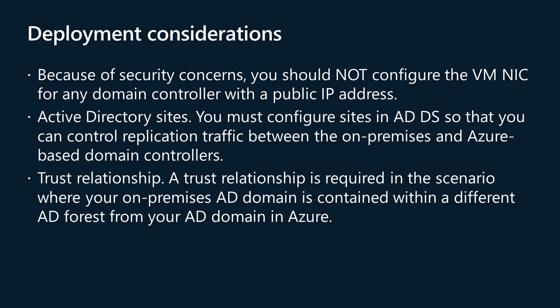In terms of network recommendations, configure the VM network interface for each ADDS server with a static private IP address for full DNS support. You must also configure the Active Directory Subnet Network Security Group, NSG, rules to permit incoming traffic from on-premises and outgoing traffic to on-premises. Because of security concerns, you should not configure the VM NIC for any domain controller with a public IP address.